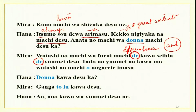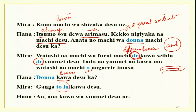Watashi no machi wa furui machi de kawa seihin de yuumei desu — my town is an old town and it is famous for leather goods. Indo no yuumei na kawa mo watashi no machi wo nagarete imasu — a famous river of India also flows through my city. Donna kawa desu ka — what river are you talking about? Ganga to iu kawa desu — it is the river called Ganga. Ah, ano kawa wa yuumei desu ne — that river is famous.